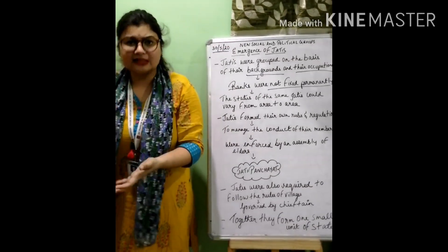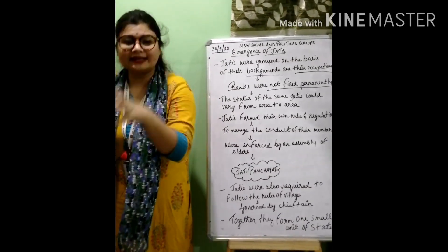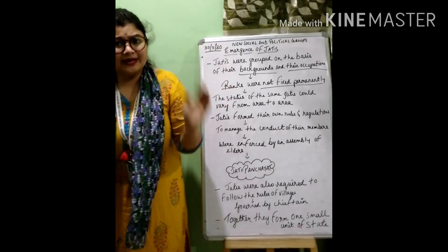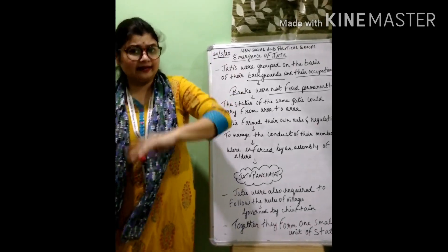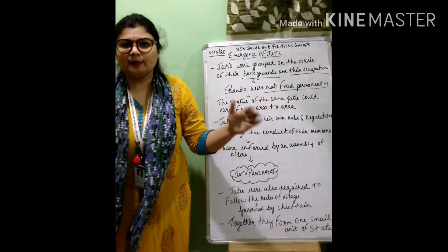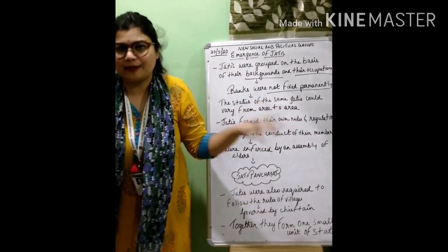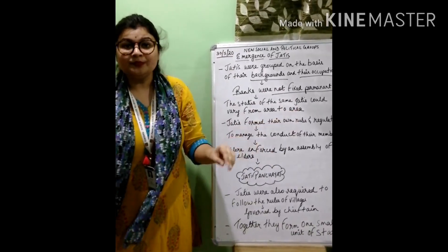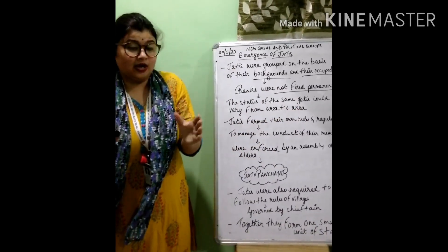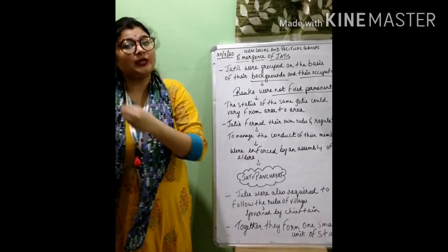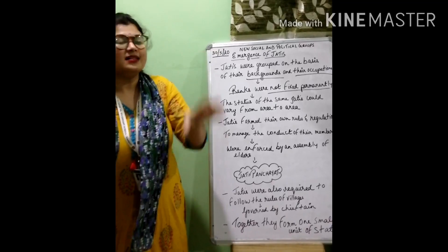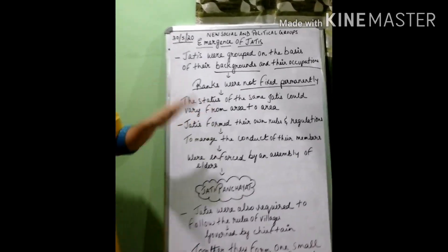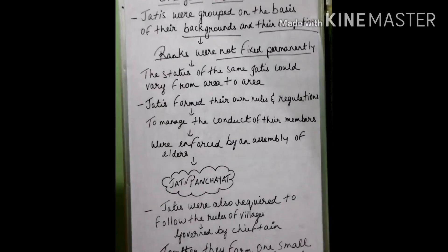In one area, a particular jati might be regarded as very high, but in another area, that same jati might be considered a low subcaste or low jati. So, according to the place and area, the status of jatis also changed.